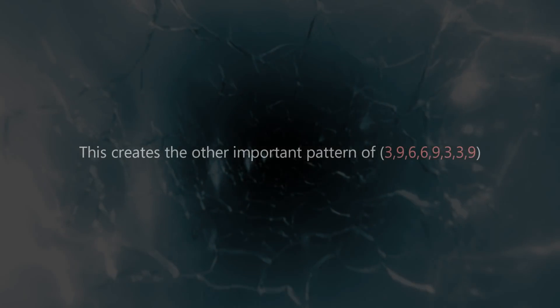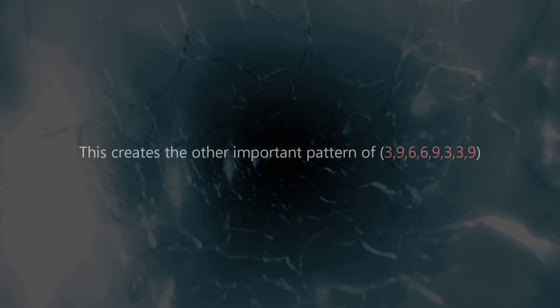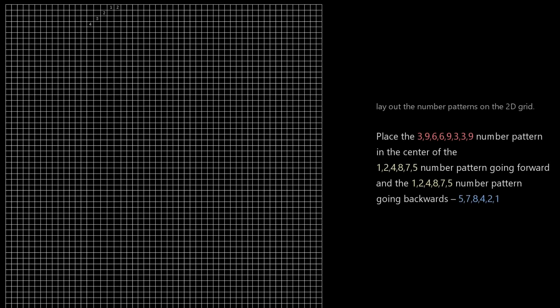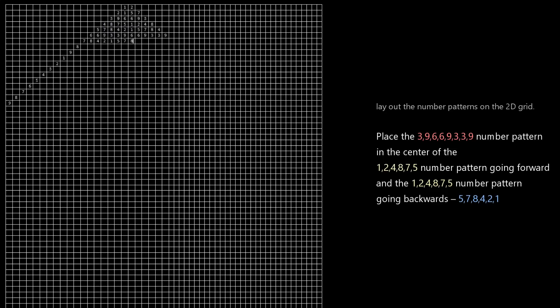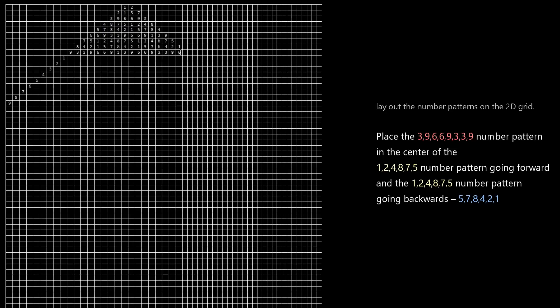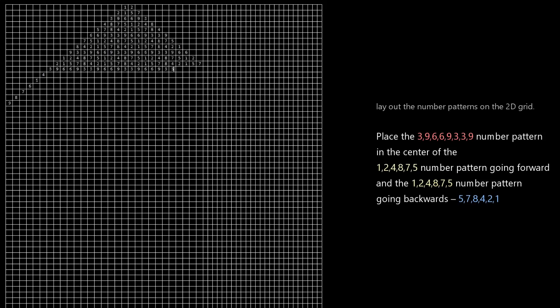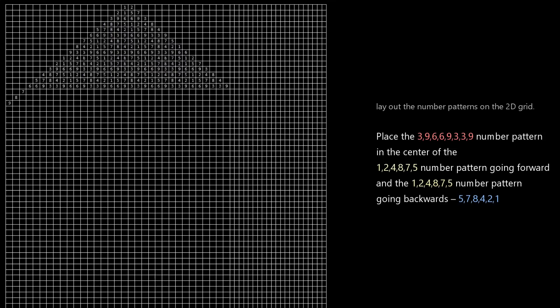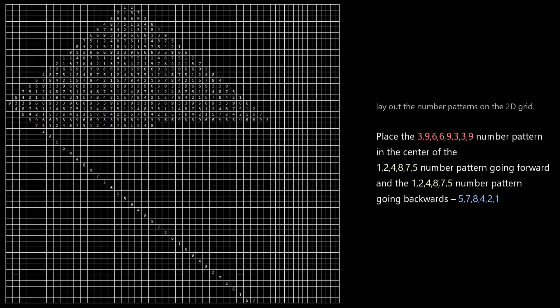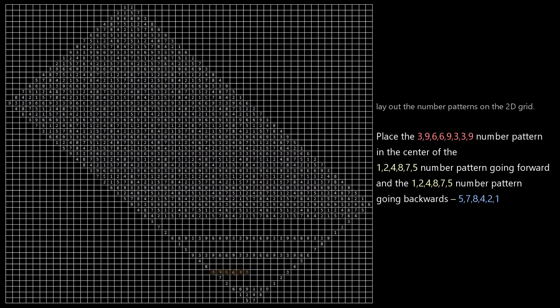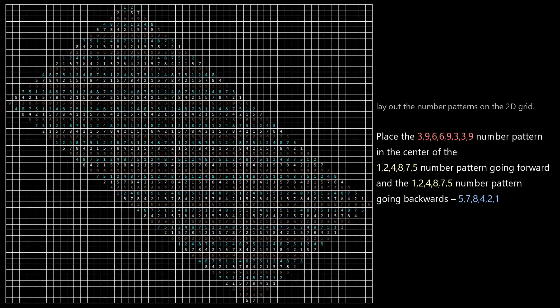This creates the other important pattern of 3, 9, 6, 6, 9, 3, 3, 9. Now lay out the number patterns on the 2D grid. Now place the 3, 9, 6, 6, 9, 3, 3, 9 number pattern in the center of the 1, 2, 4, 8, 7, 5 number pattern going forward, and the 1, 2, 4, 8, 7, 5 number pattern going backwards. So that would be 5, 7, 8, 4, 2, 1. This continuation creates an amazingly perfect number map.